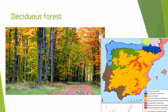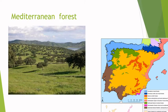Deciduous forests are usually one of the places where we find the most animals and plants. In Spain we can find deciduous forests especially in the north — the area shown in blue on the map would be deciduous forest. Then we've got the Mediterranean forest, found at low latitudes.